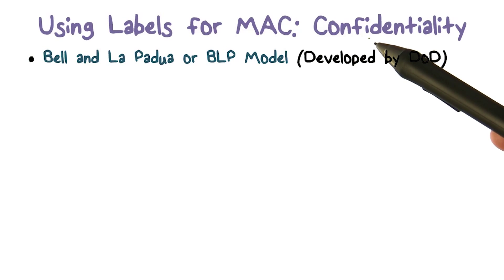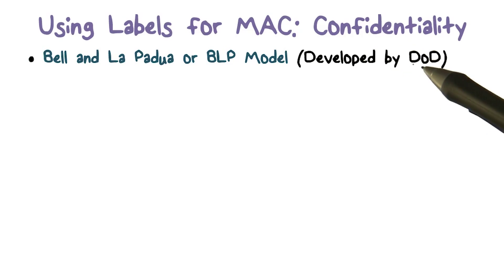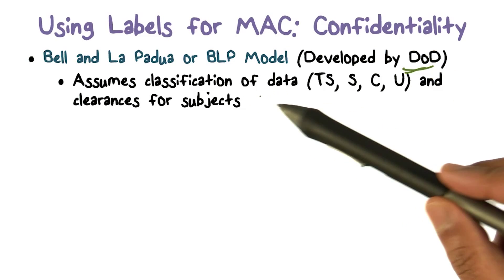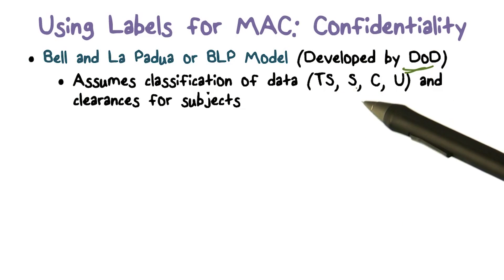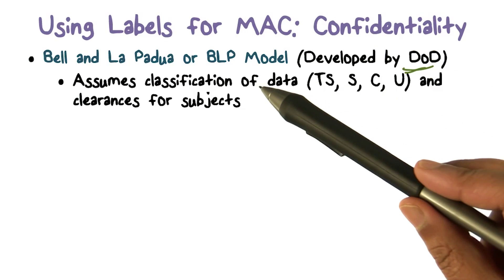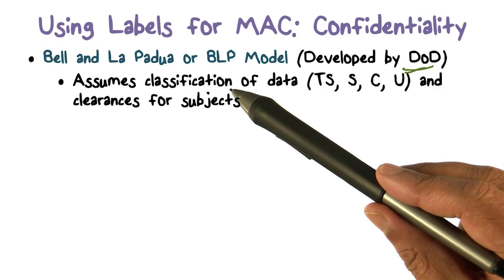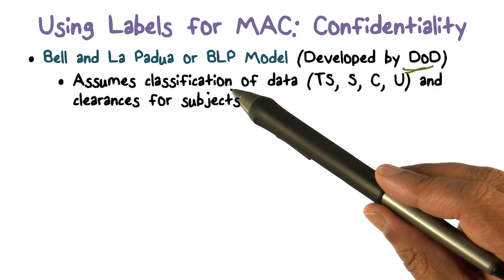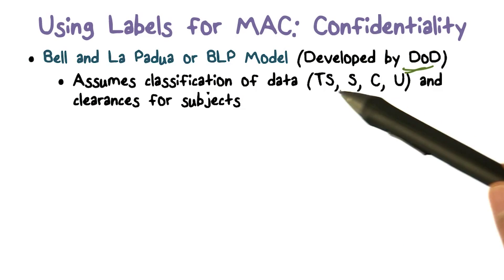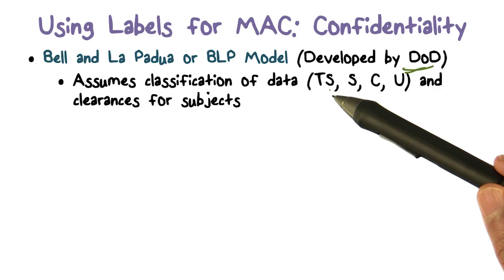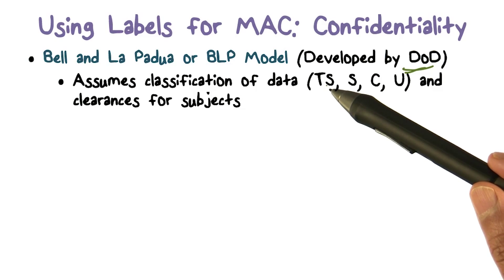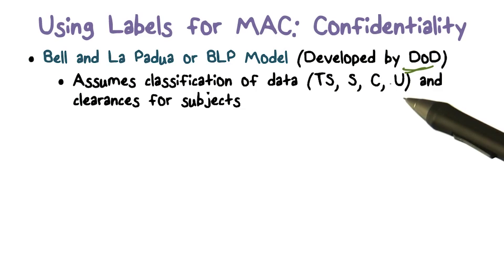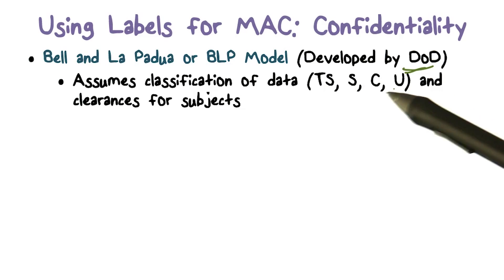Since we're talking about DoD, the labels will assume that information or data contained in files is classified at levels like TS — top secret — secret, classified, and so on.